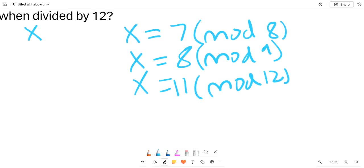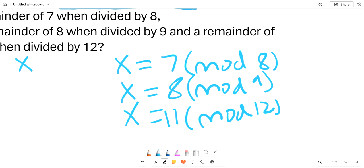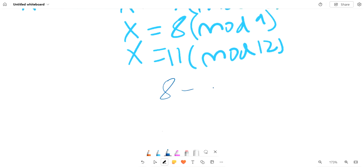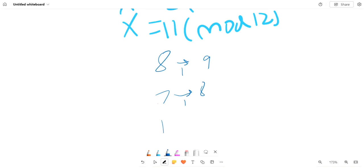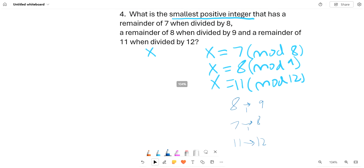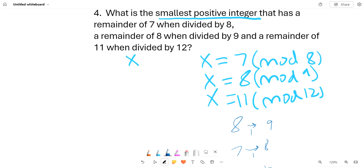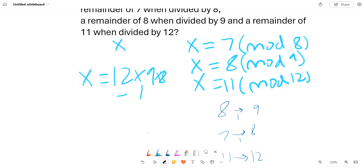From here we can notice that every one of these only jumped by increment of 1, so like 8 to 9 that's only 1, 7 to 8 that's only 1, 11 to 12 that's only 1. So we can see that if we just have x equals some multiple of 12 times 9 times 8, and then we subtract 1, then it'll have 1 less than every multiple of 12, 9, and 8.